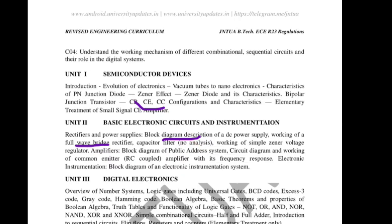A DC regulated power supply maintains constant voltage at output even when the load changes. The block diagram represents: input voltage → rectifier (AC to DC) → Zener voltage regulator → filter. That is a one-mark question. A 10-mark question is also expected from DC regulated power supply — explain full wave bridge rectifier along with waveforms, with and without filter.